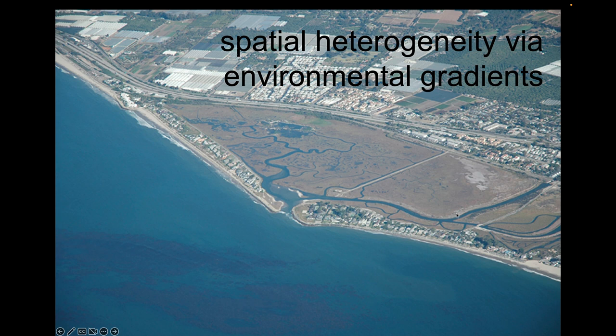Depending on tides, time of year, and rainfall, that mixing zone is going to be closer to the mouth or closer to the back — and organisms have to respond to that environmental gradient. Some respond seasonally; others respond over the course of a tidal cycle. Some organisms are very tolerant; others have a behavioral response. Crabs, for example, will actively move up and down in the tidal channel to maintain a particular salinity they prefer.